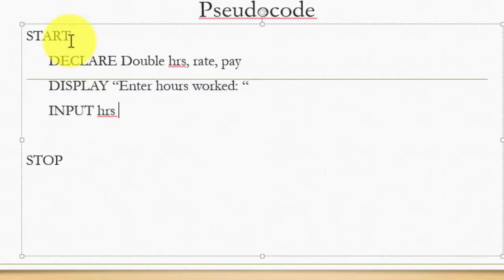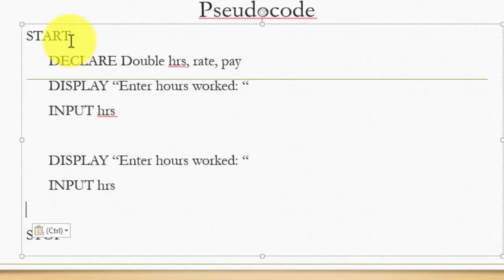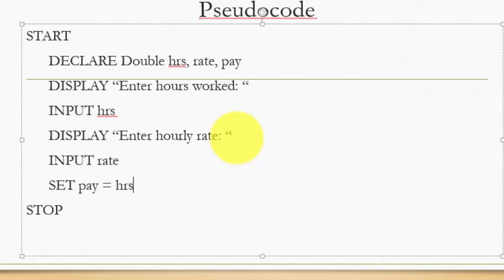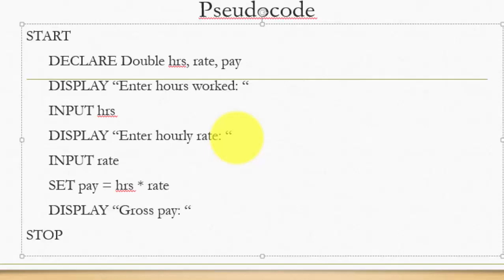I will copy-paste those two lines and make some changes. The next set of input is: display 'enter hourly rate', then input rate. Then set pay equals to hours times rate. And finally my display statement which will say 'gross pay is' and then display the pay. This basically is my pseudocode for the program.